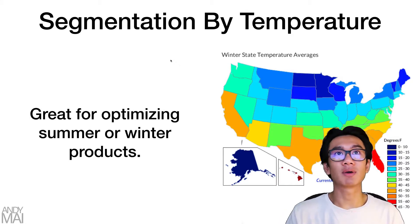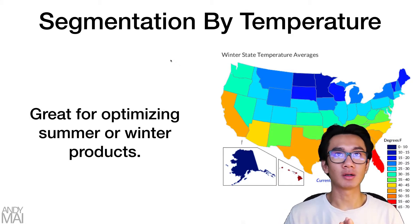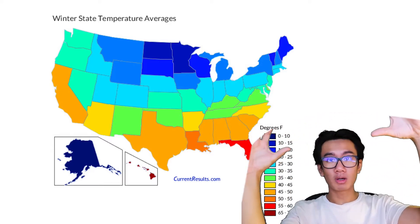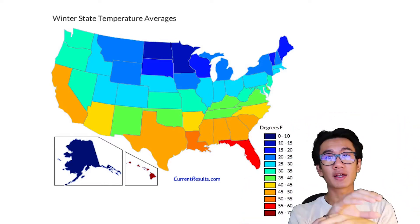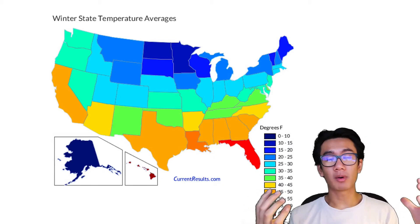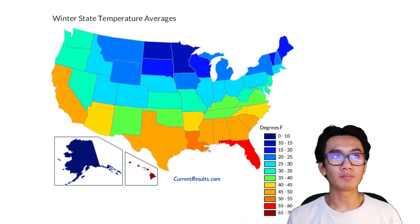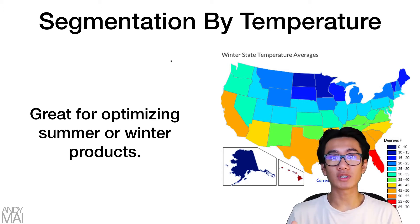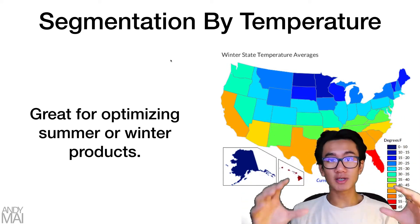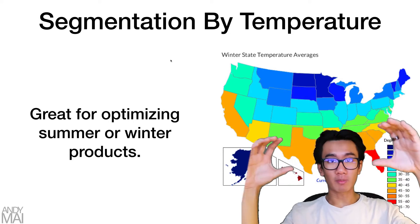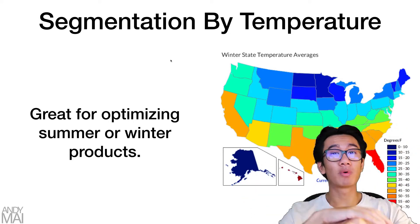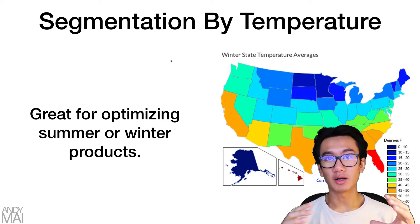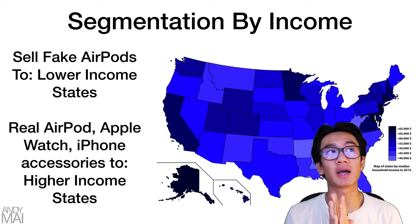You can repeat this exact same strategy with segmentation by temperature. As you can see in this graph, you can collate all the states at the top of America, which are very cold, and all the states at the bottom, which are generally much warmer. This is a great way to optimize for summer or winter products — you'll likely find that the top states perform much better for a winter product.